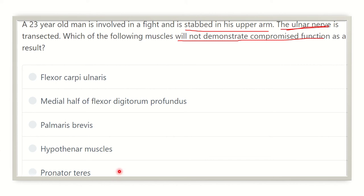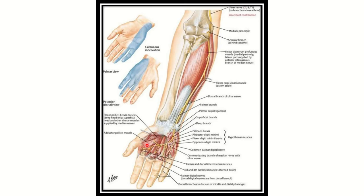We have to find the muscle which is not supplied by the ulnar nerve. In this picture we can see the ulnar nerve, and from the forearm it passes behind the medial epicondyle, then descends between two muscles — flexor digitorum profundus and flexor carpi ulnaris — then descends down and finally goes through the Guyon's canal, where it divides into superficial and deep branches.